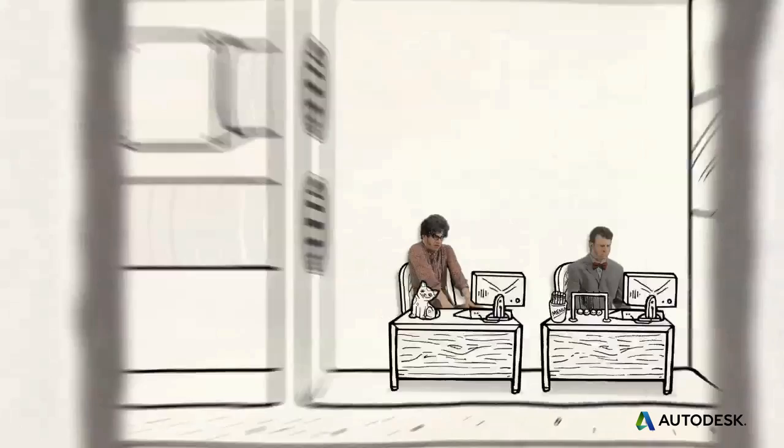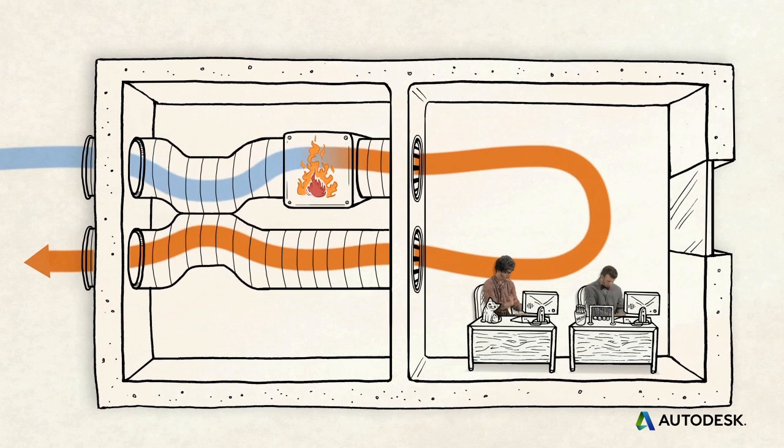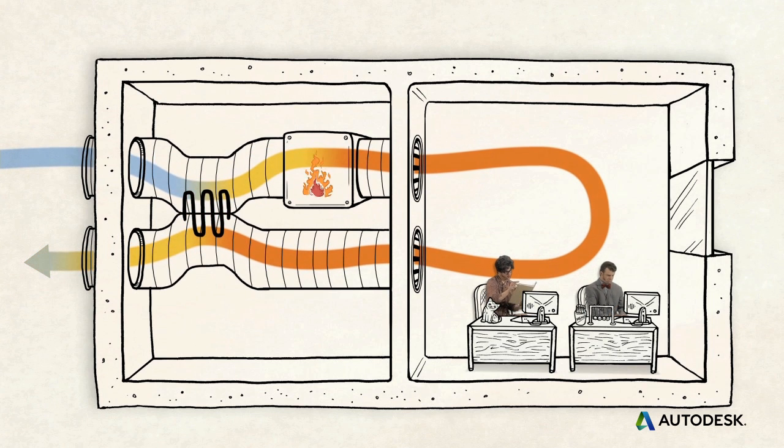It's also important to optimize the whole system, and not just its parts. For example, don't throw away the energy you already spent heating or cooling the inside air when you bring in fresh air. Heat exchanging systems can recover that heat, coolness, or even humidity before the air is exhausted.